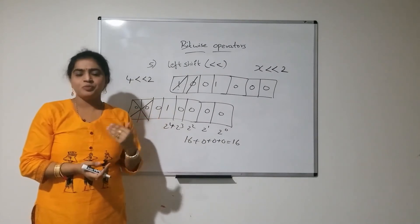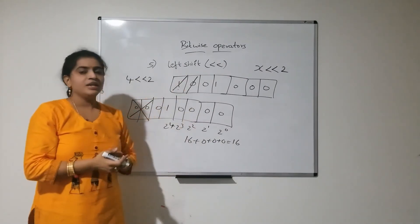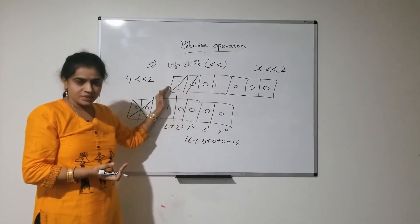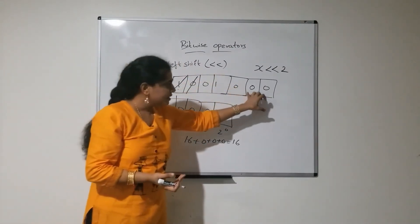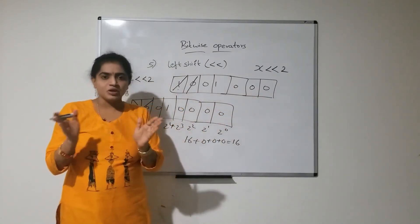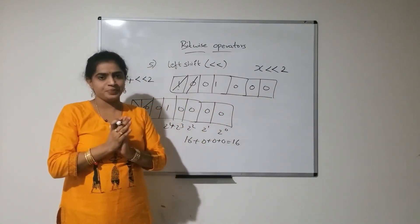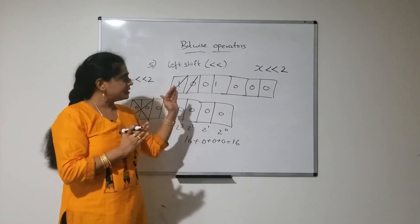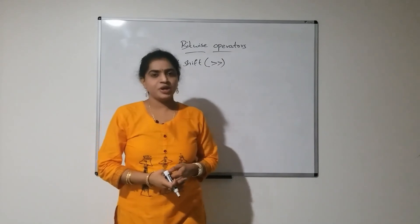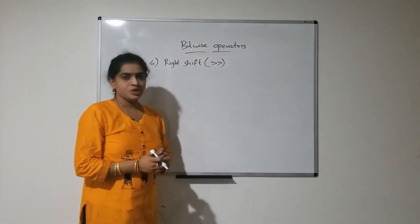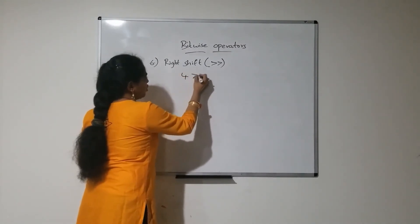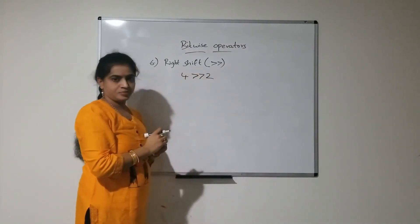Like this, we perform left shift operation — remove the leftmost bits and fill the empty cells on the right with zeros. Next, coming to the last one, which is right shift. For example, 4 right shift of 2.